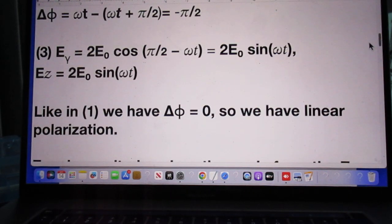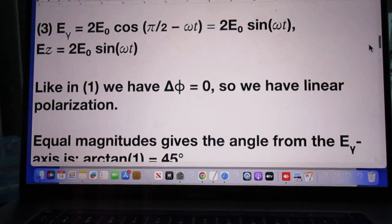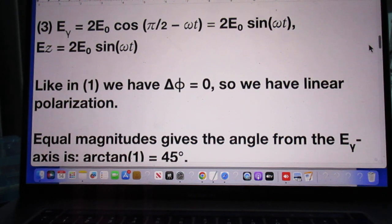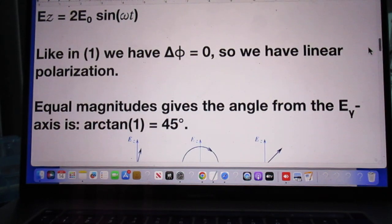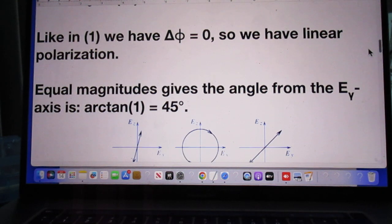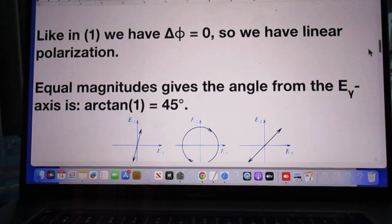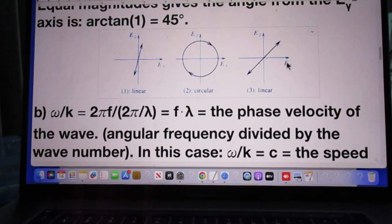Now the last one. E of y is 2E_0 sine omega t and E of z is 2E_0 sine omega t. Like in one, we have delta phi is zero. So we have linear polarization. But the magnitudes in the two directions is the same, because the angle is 45 degrees. And you see that here.